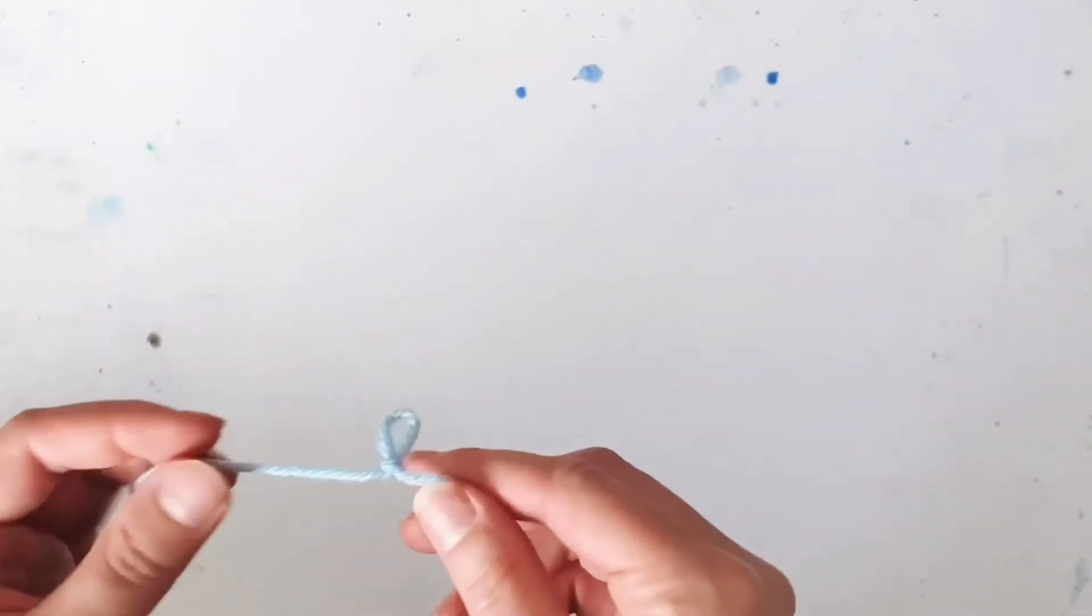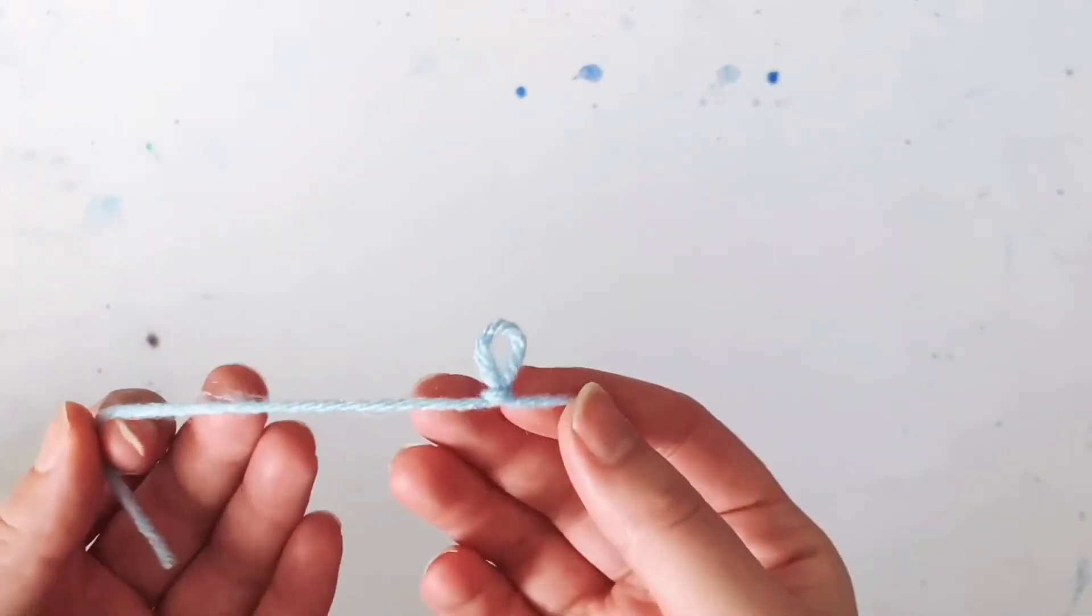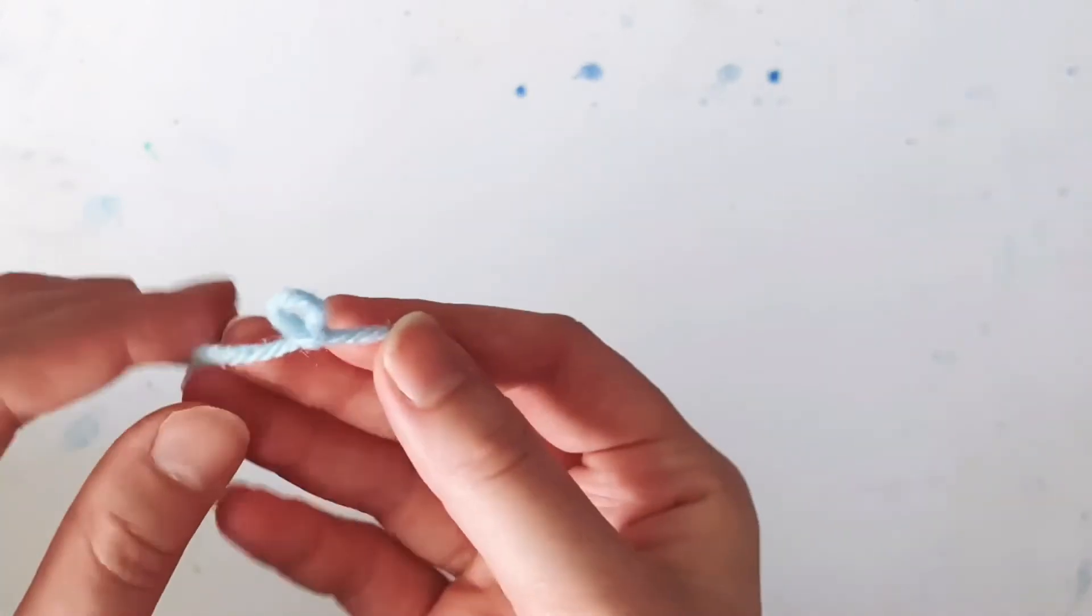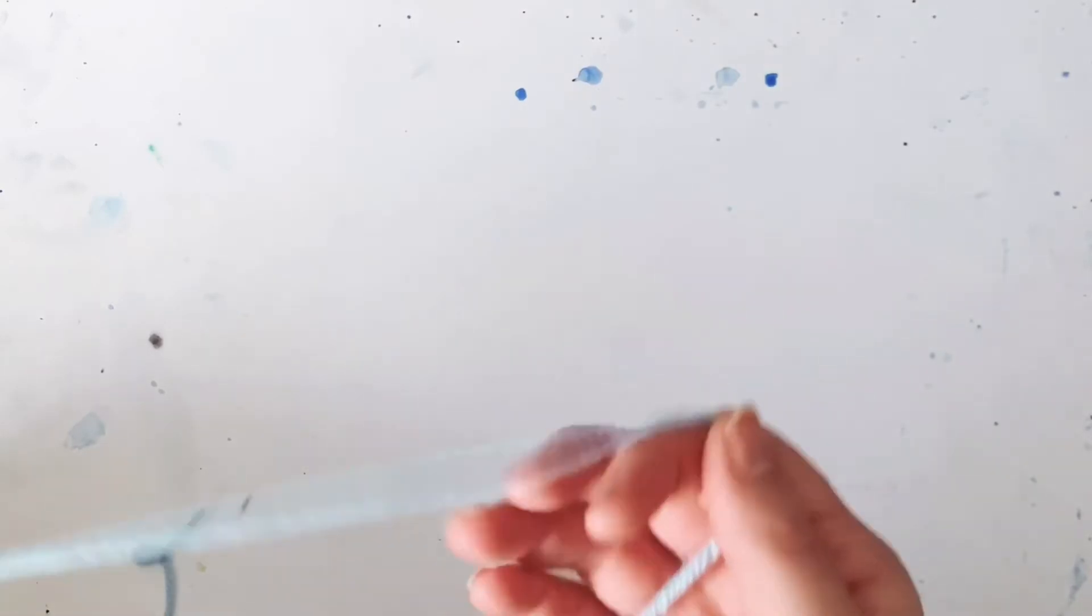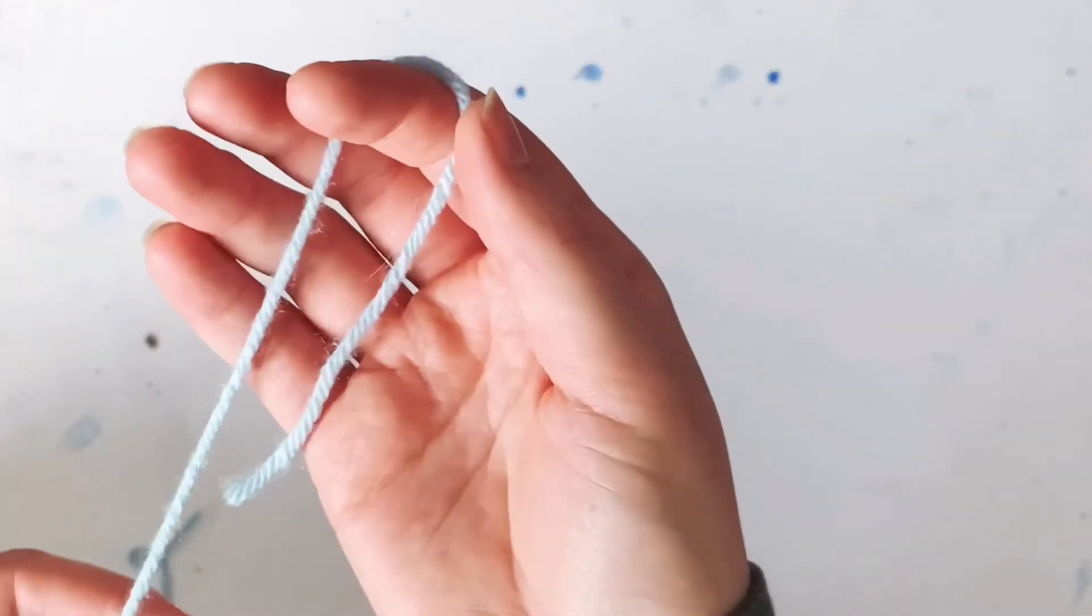I'm going to show you two different ways that you can make a slip knot. The first way is for right handers. If you're left-handed, you just have to flip-flop. If I'm using my right hand, you would use your left hand.